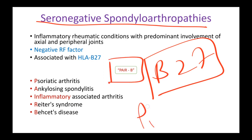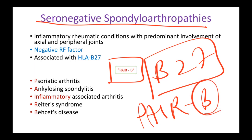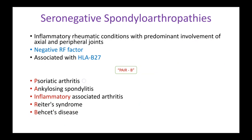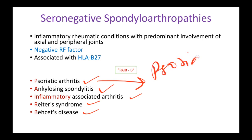The conditions can be remembered with the mnemonic PAIR-B: P for Psoriatic arthritis, A for Ankylosing spondylitis, I for Inflammatory associated arthritis, R for Reiter's syndrome, and B for Behçet's disease. Psoriatic arthritis is psoriasis — the skin condition with white scaly patches or plaques — that also presents with joint pains.